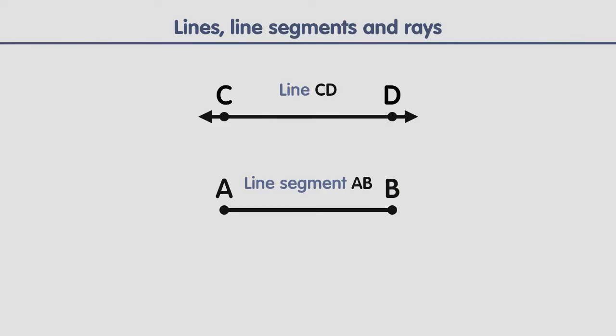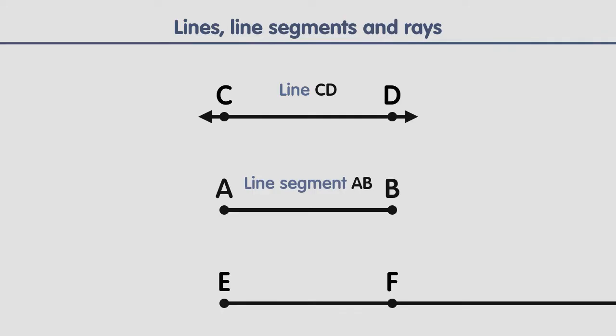There is one more special type of line that we need to talk about, and it's basically a combination of a line segment and a line. We call it a ray. To draw a ray, suppose we have a line segment with endpoints E and F. But now imagine that we extend this line segment forever in one direction — for example, in the direction that goes from E to F. And so we have created the ray E-F. Rays have beginning points but no ending points — they just keep on going forever, but only in one direction. Similar to a line, we draw an arrowhead to indicate that the ray continues in that direction.